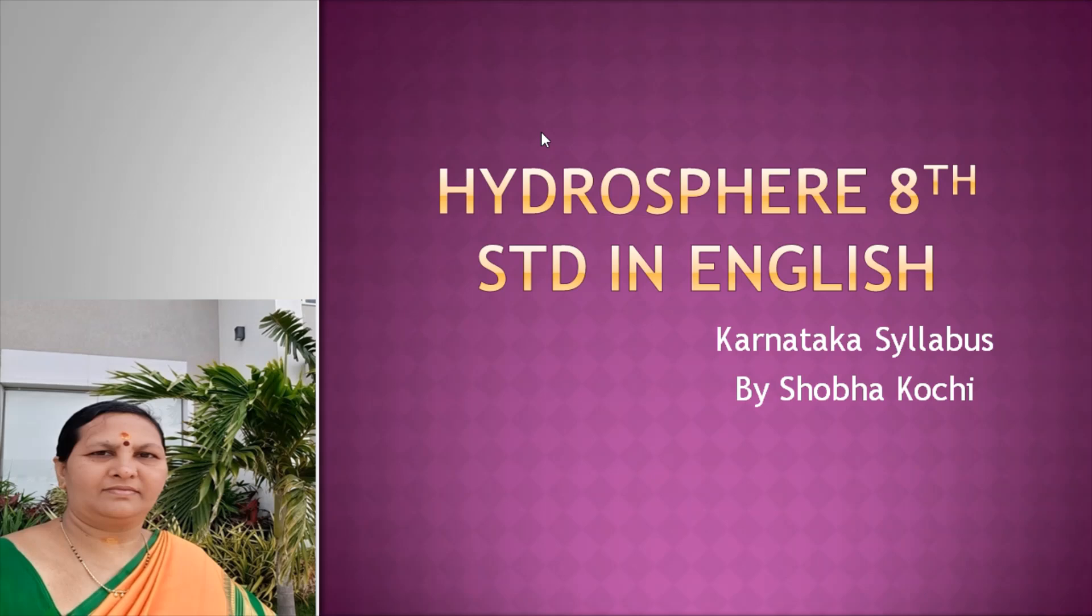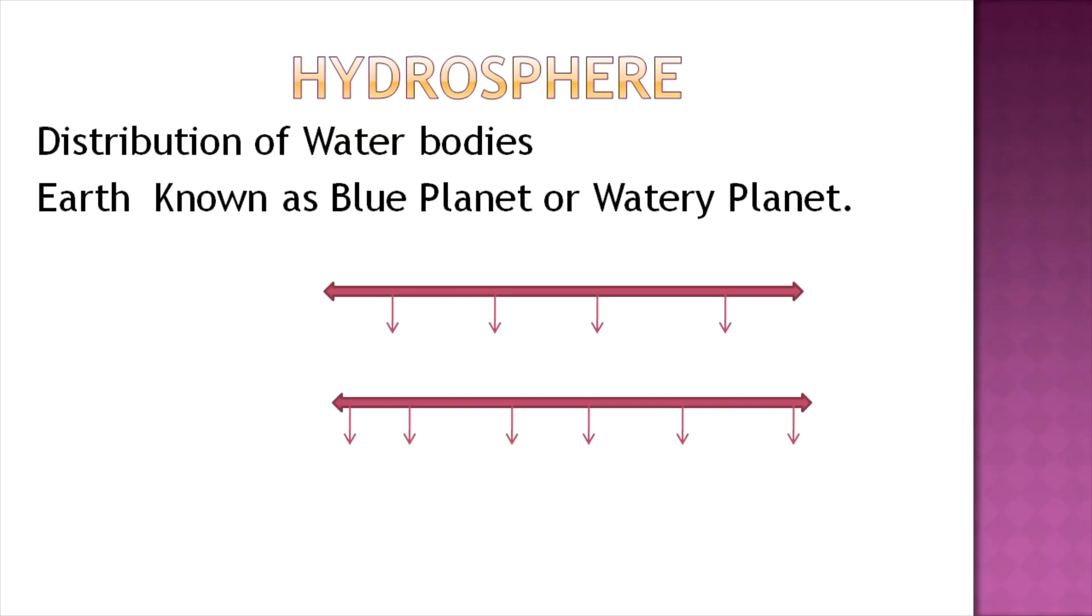I am Shobha, and today I am going to talk about the hydrosphere. The hydrosphere refers to the distribution of water bodies. Earth is known as the blue planet or watery planet because 70.78% of it is covered by water.